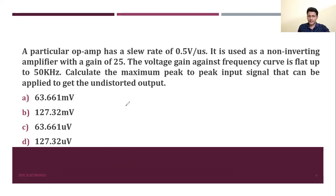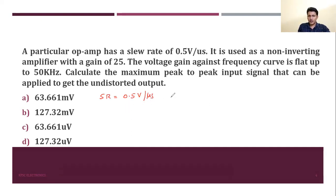To find the undistorted output, we use the slew rate, which is the rate of change of output voltage with respect to time. The slew rate is 0.5 volt per microsecond. We use the slew rate equation: slew rate equals the derivative of the output voltage with respect to time.